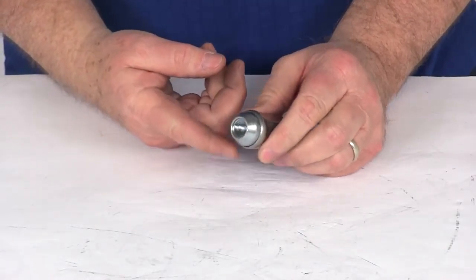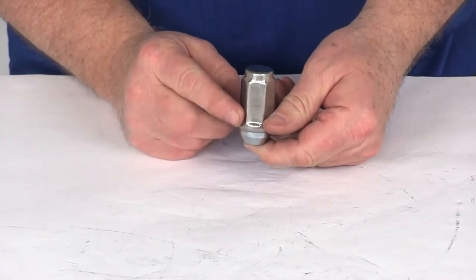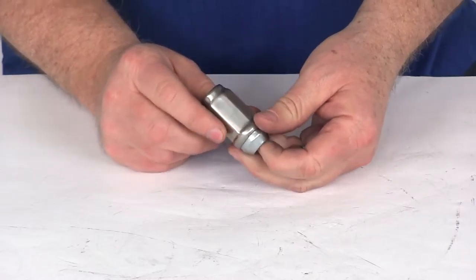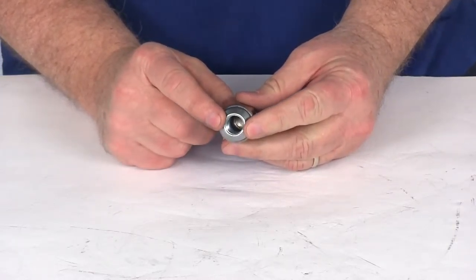Today we're going to take a look at the half inch by 20 stainless steel acorn trailer wheel lug nut. This is designed to fit half inch diameter wheel studs.